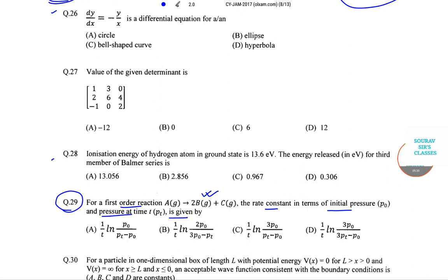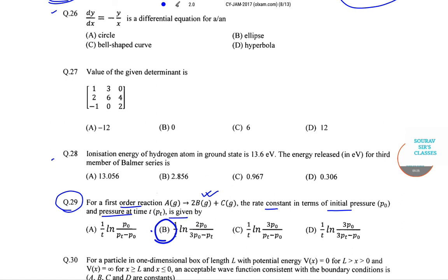Now if you look at the options, the value we have computed is an exact match. The value we have computed is an exact match to option number B. So B will be the correct answer to this particular question.